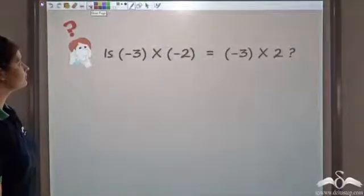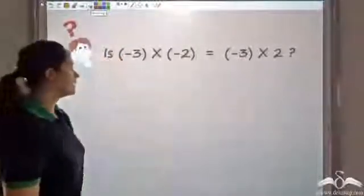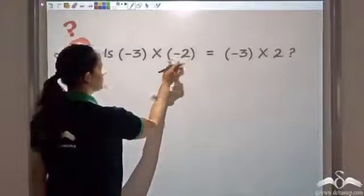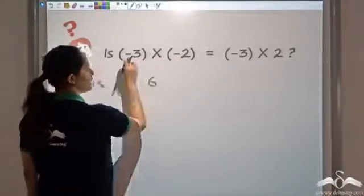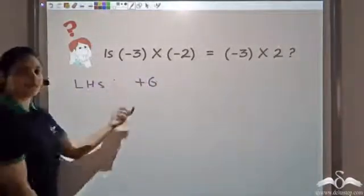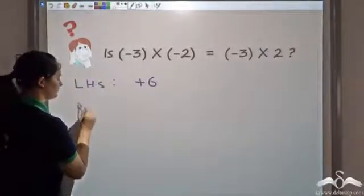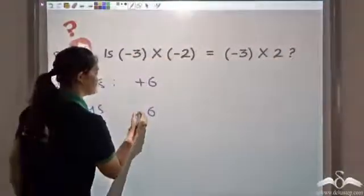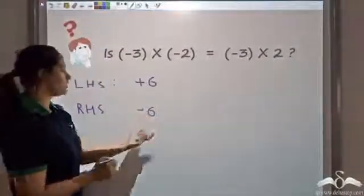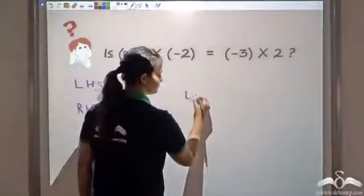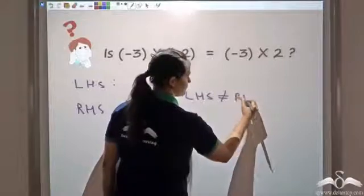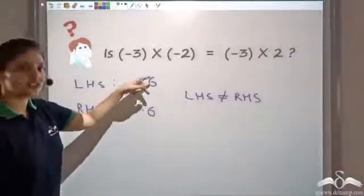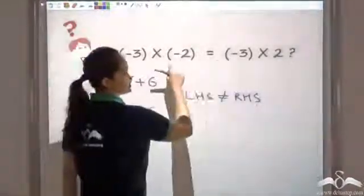Now can you answer this: are both these sides equal? Let's solve the left-hand side first. Negative three times negative two — three into two is six, and negative times negative gives positive — so the left-hand side is positive six. The right-hand side: three into two is six, but negative times positive gives negative, so the right-hand side is negative six. Left-hand side and right-hand side are not the same, because positive six is not equal to negative six. The magnitude is the same but the sign differs, so the two results are not equal.